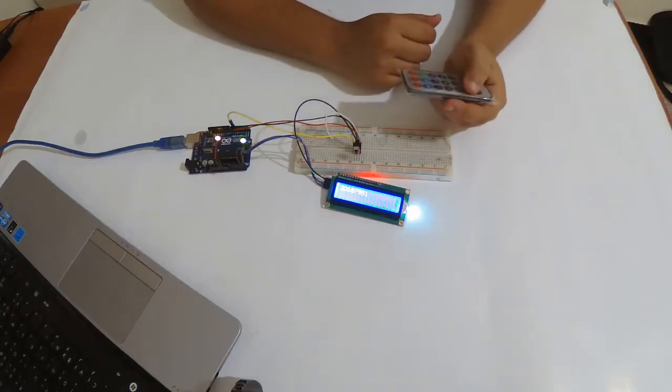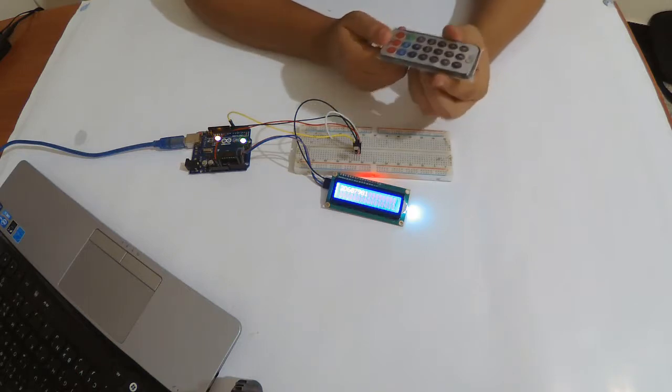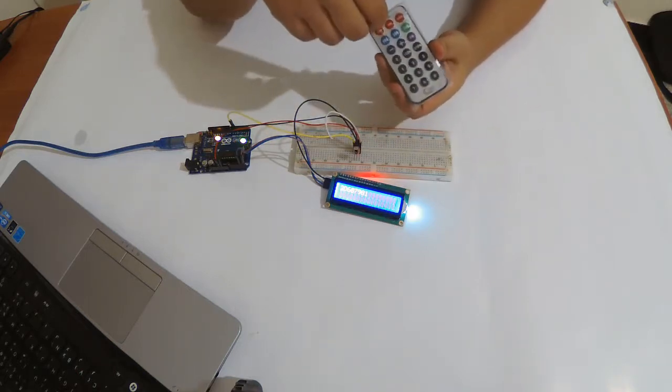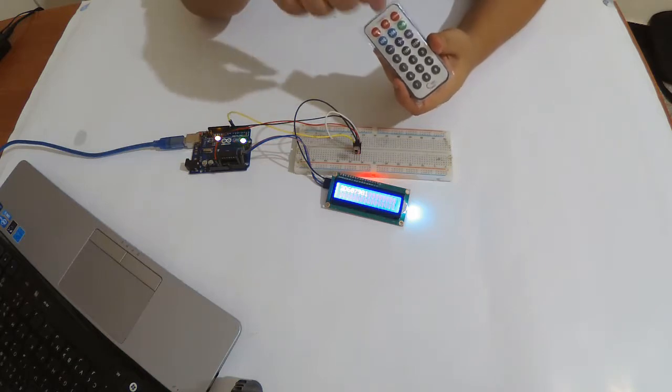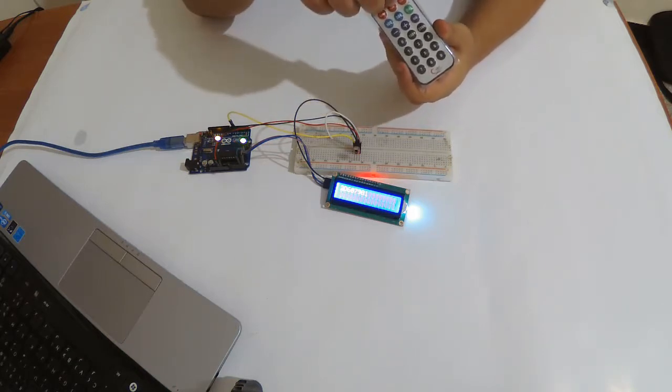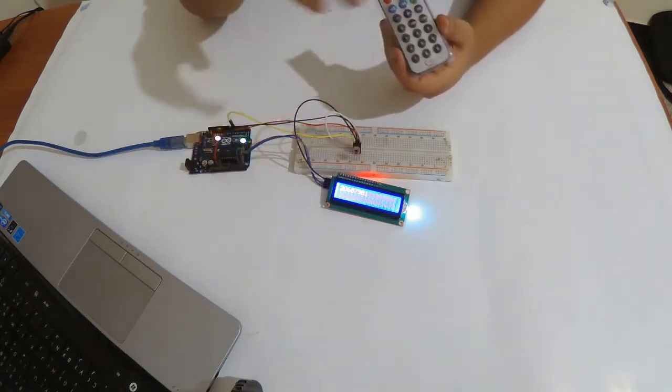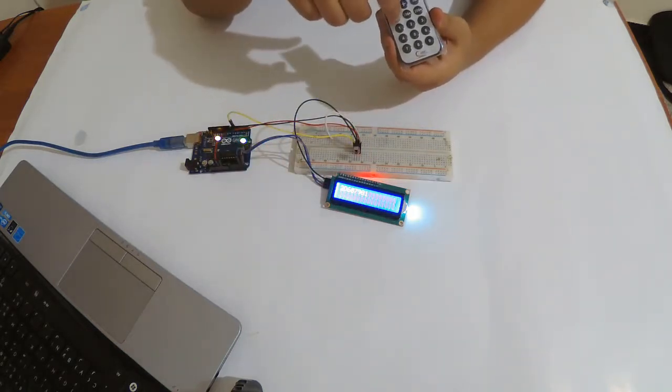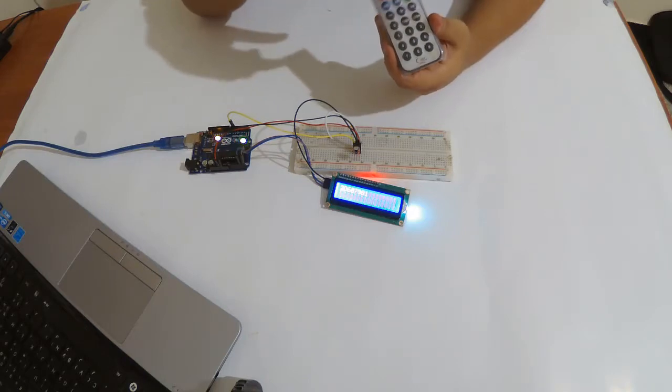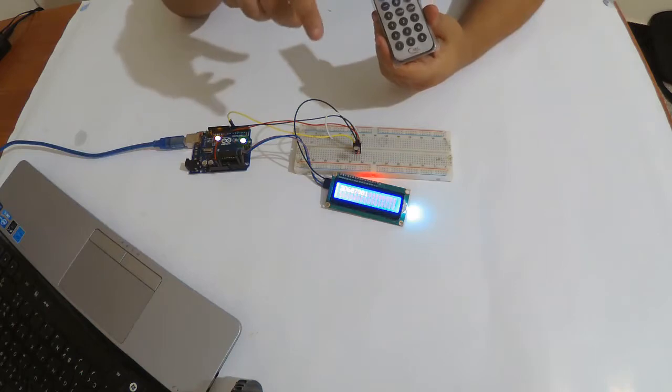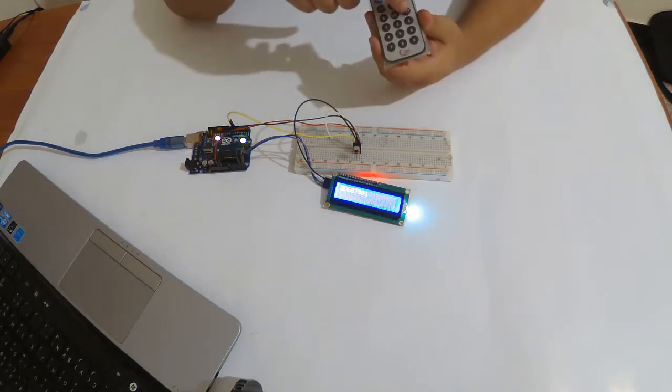So in the next code, instead of these hexadecimal numbers, it shows which button I clicked. In the code, which you'll find right below, I associated every code with its character. I created a function that translates the code into real letters like one, two, three, or vol minus, vol plus, or channel.